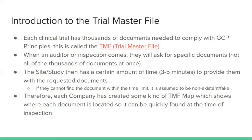These documents are used to run the study, so they shouldn't be hard to find — you should already be utilizing them. For example, a 1572 outlines a lot of the aspects for a site and should be readily available because the team uses it regularly — to check if the lab address changed, who's on the document, and to utilize it for training purposes. It should be a used document, not something you have to go find. We'll go into the TMF map and TMF plan, which are two tools companies use to keep documents in order.